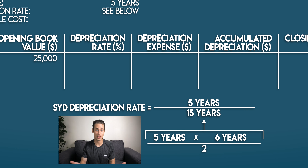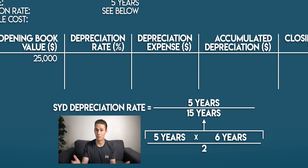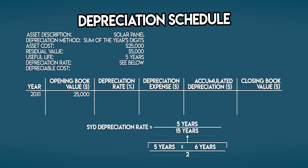I've included this in my depreciation cheat sheet — if you'd like a handy reminder of the formula, you can buy a copy on my website; I'll link to it in the description. Choose your method — it doesn't matter which. Your depreciation rate for year one is five years divided by 15 years, which gives us one third, or 33.33 percent.